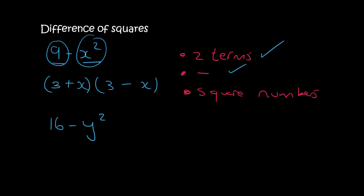Here's another one. Do we have two terms? Yes. Do we have a minus? Yes. Each one is a square number, so we can say the factorized form is (4 minus y)(4 plus y).